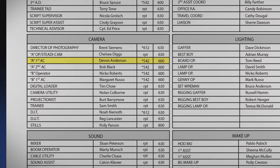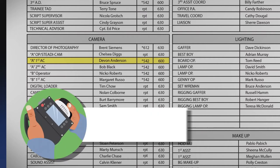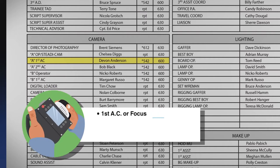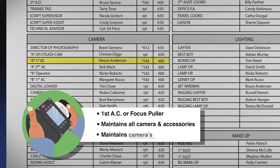The first assistant camera person, or first AC, is also the focus puller. They are in charge of maintaining the cameras and apply appropriate lenses and filters to the camera. During a shot, they are in charge of maintaining the camera's focus.